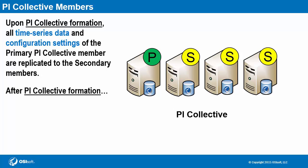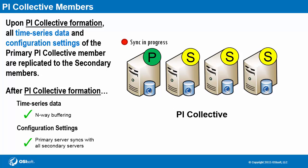After this point, there are two major categories of information that continually must be kept the same across all members. First, time series data — we already know that it's n-way buffering on the PI interface nodes that helps achieve data consistency across all members. Next, consider configuration settings like PI point attributes and PI data archive security that get edited on a member of the PI collective. Changes can only be made on the primary server; the PI collective won't allow changes on any secondary server. After a change is made, the primary member is responsible for syncing these changes so that the rest of the PI collective members receive this update. This is all automatic and takes no effort on the user that makes the change.